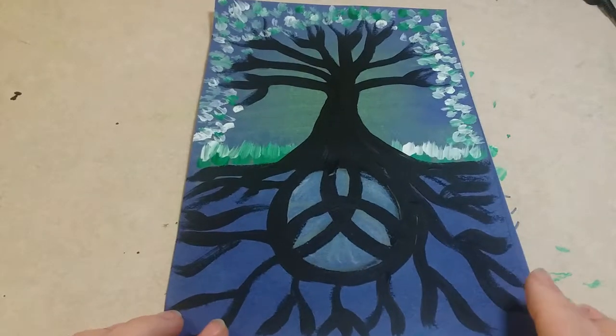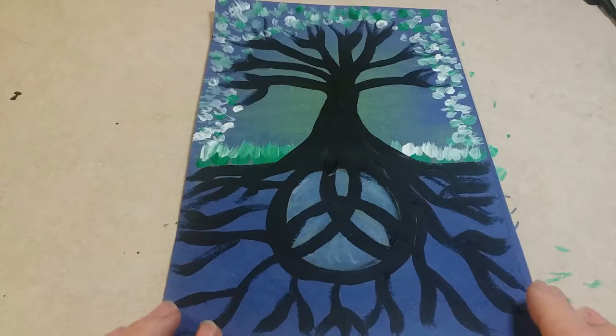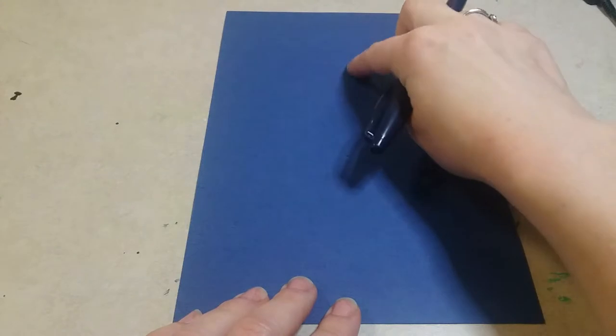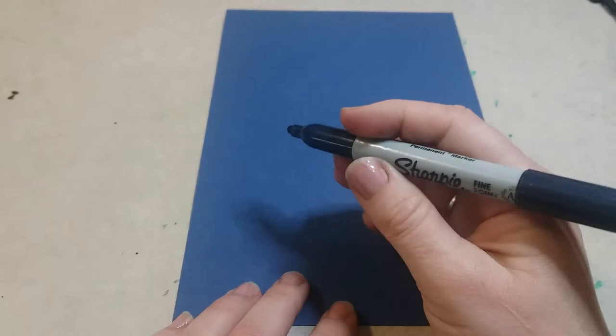Hey boys and girls, today we are going to be making this mixed-media Celtic tree. To get started, you're gonna get a piece of blue construction paper and you're gonna hold it portrait style so it's longer up and down than it is side to side. You guys are gonna start with a pencil.